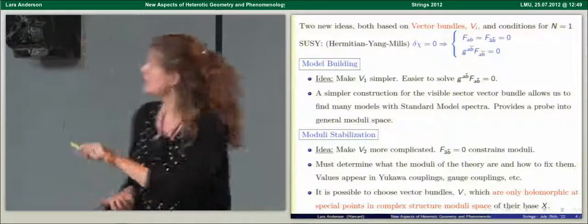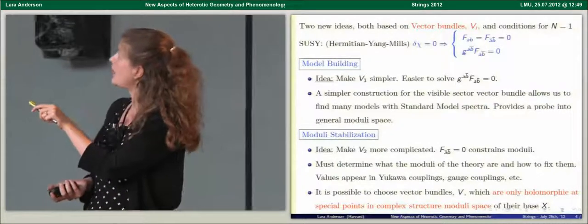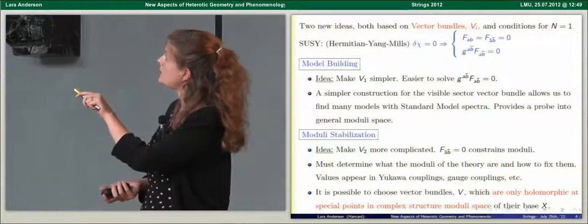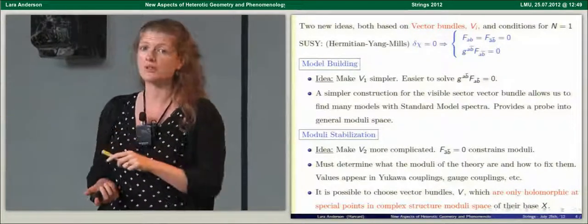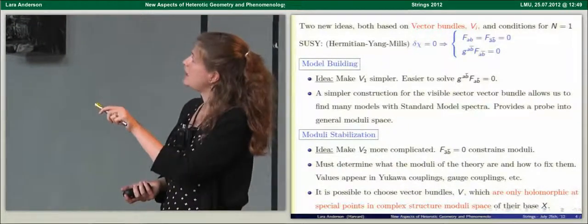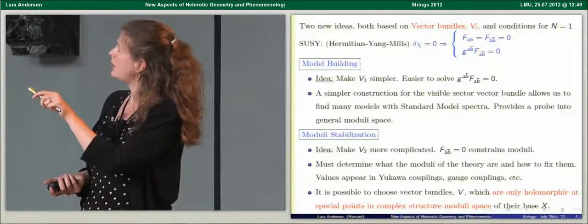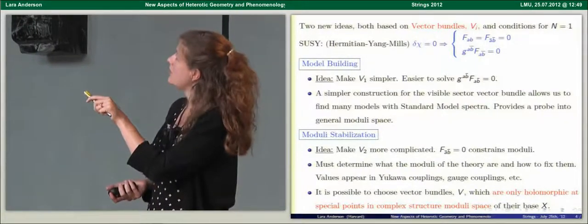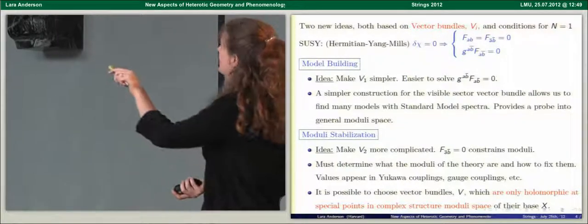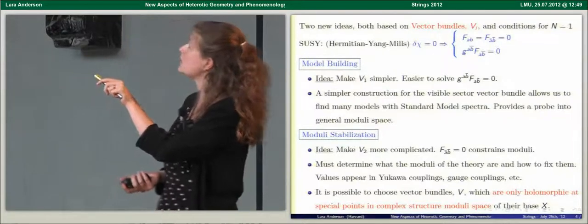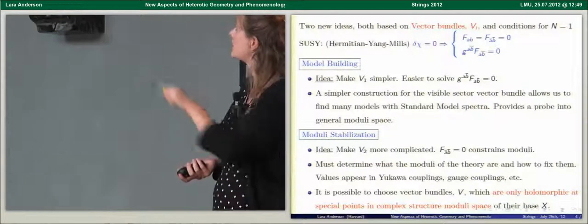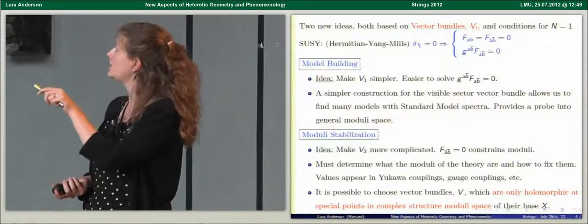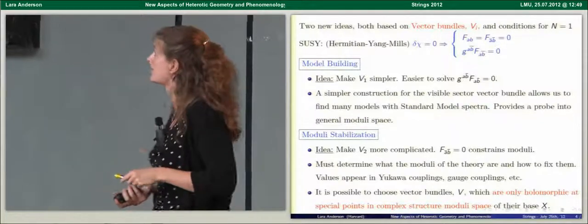The first part of the talk will describe ways to produce effective theories with standard model spectra. Specifically, I'm interested in tuning heterotic geometry to produce an exact MSSM spectrum with no charged exotics, chiral or otherwise. Historically, the choices for vector bundles have been limited by having to solve very complex PDEs. I'll present a class of solutions that are much simpler and provide a probe into the more general moduli space.